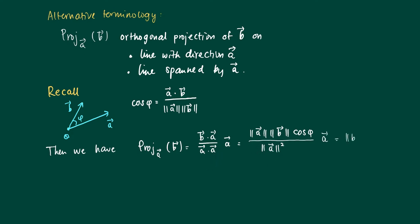Times A. So one term, one length of A cancels out, so we see that it's the length of B times the cosine of phi times a unit vector, a vector of length 1.